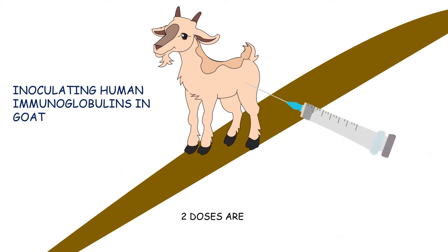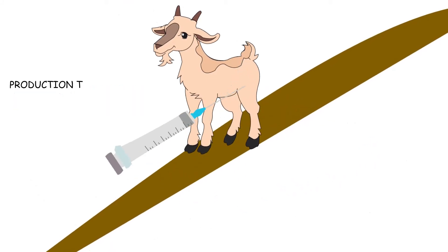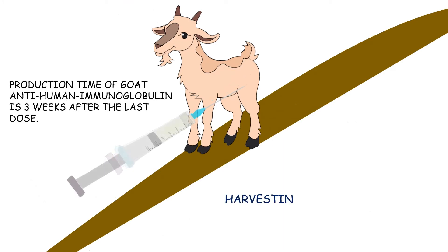The second step involves inoculating human immunoglobulins in goat. Two doses are given with six weeks interval between doses. The production time of goat anti-human immunoglobulin is three weeks after the last dose. Here we are harvesting anti-human immunoglobulin from goat.